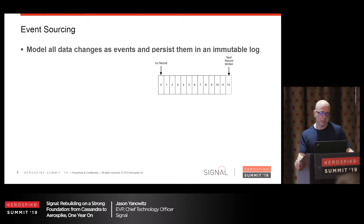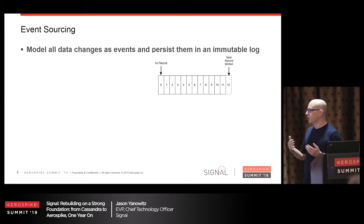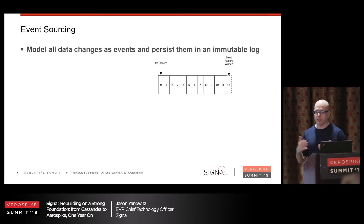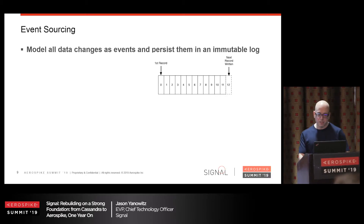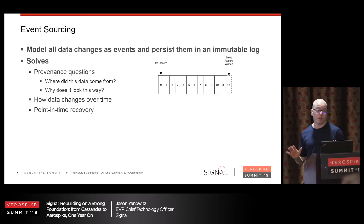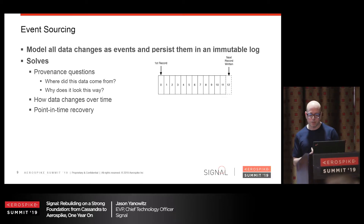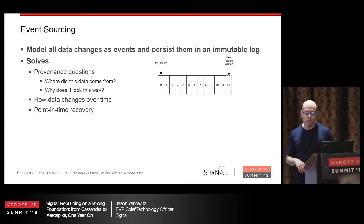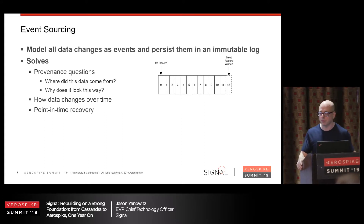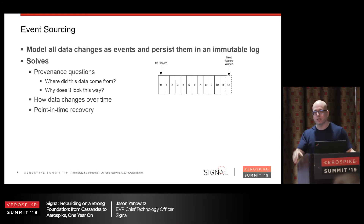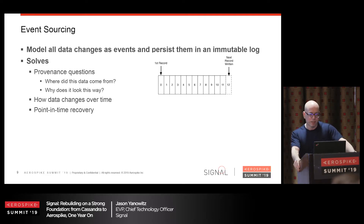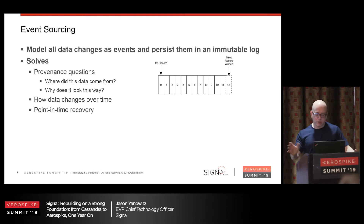On event sourcing: we've been buffering our writes through Kinesis for quite a while, so in some sense those are events. But in a truer sense, there's data in a message and business logic littered all over the place that you have to stitch together into a change. We need to get better about that. We model any mutation as an event and persist it in some sort of immutable log — in our case, Parquet files in S3. This solves data provenance questions: where did this data come from, why does it look the way it does, when did it enter the system? You can also do analyses on how data changes over time and do point-in-time recovery.